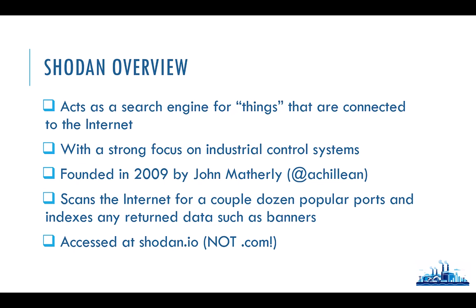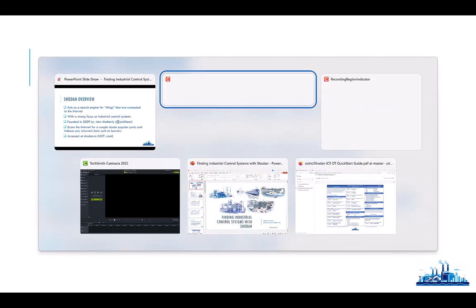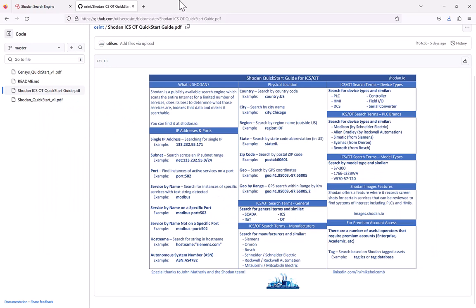Even though a lot of these environments don't think their systems are exposed, they are. You can find Shodan at shodan.io — not .com. I think .com got registered by a malicious group, and if you try to visit shodan.com from a Windows system, Windows will actually automatically block you and give you one of those big red warning banners. So go to shodan.io.